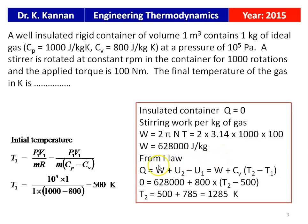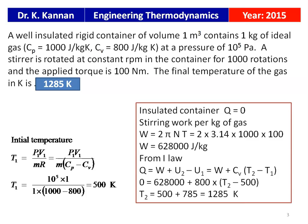From the first law of thermodynamics: Q = W + (U2 − U1), with Q = 0. So −W = CV(T2 − T1), giving 0 = −628,000 + 800(T2 − 500). Solving: T2 = 500 + 785 = 1285 Kelvin. The final temperature of the gas is 1285 Kelvin.